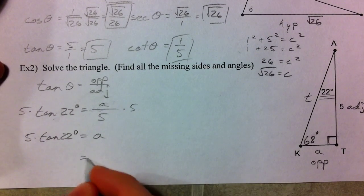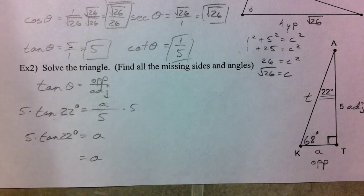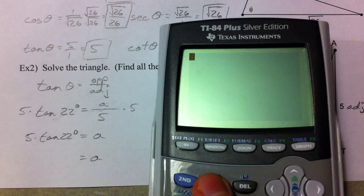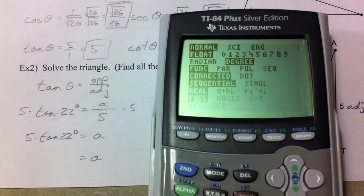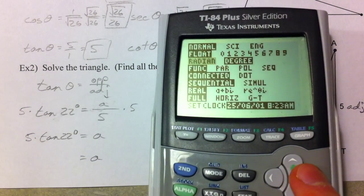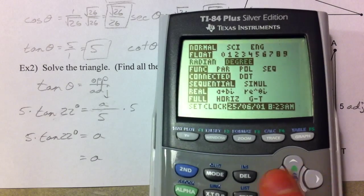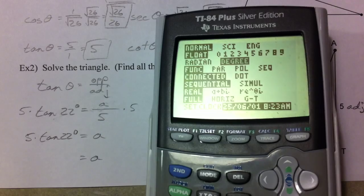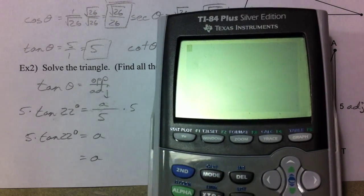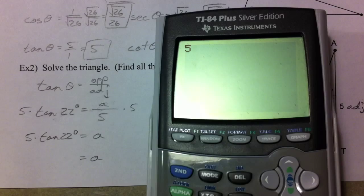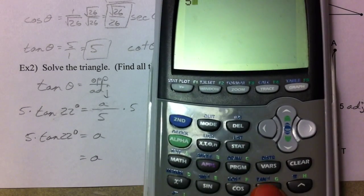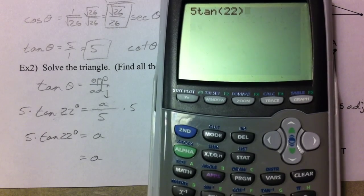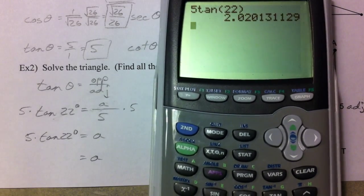To solve this, you need to make sure that your calculator is in degree mode. So what I mean by that, hit the mode button. It's right here, right by the second. And third row down, it has radian and degree. You guys don't know about radians yet, but you will very soon. And hit enter on the degree just to make sure it's highlighted. We're going to take 5 times the tangent, which is right here, of 22 degrees. And we get 2.02.